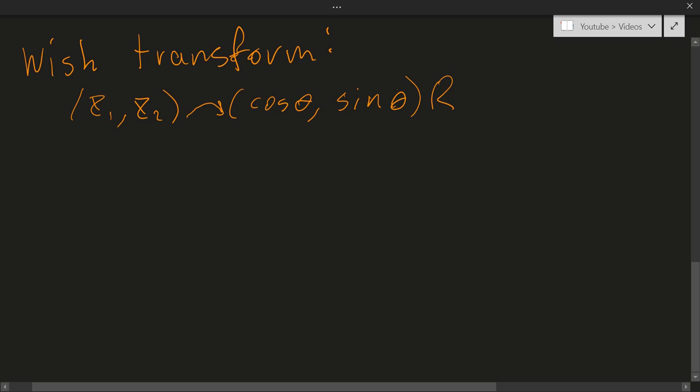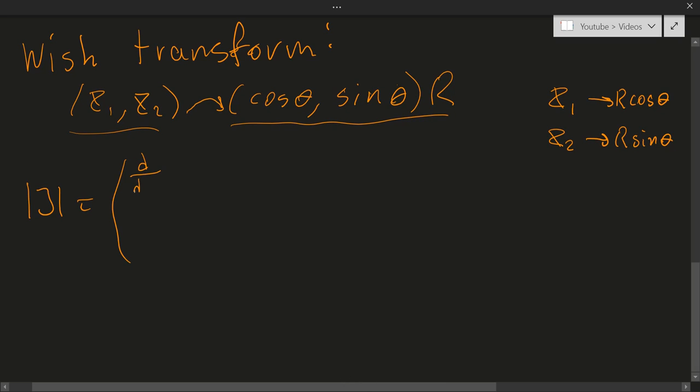So I want to find the density of this side instead of this. So we know the density of the left side, and then we take some function, so we can find the Jacobian matrix, or the determinant of the Jacobian matrix. We can consider this as a matrix where this function takes x1 into r cosine theta, and x2 into r sine theta.